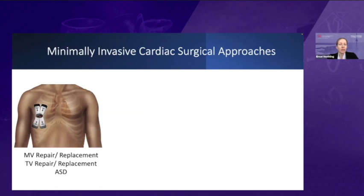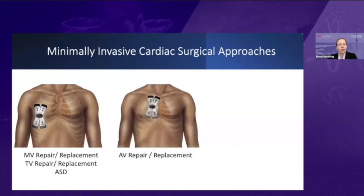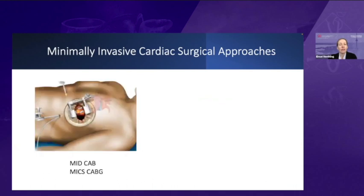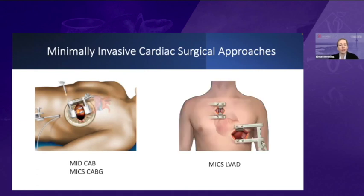With all of the different approaches we have for minimally invasive cardiac surgery, there are also different approaches to the chest. We do an anterolateral thoracotomy for mitral valve repair, tricuspid valve repair, as well as for an ASD. For aortic valve repair and replacement, we do a right anterior thoracotomy or a mini sternotomy. For MICS CABG, depending on whether we're doing left-sided or right-sided, we do a left anterior thoracotomy or a right-sided for a right coronary. You can also do a sternal-sparing procedure, such as a MICS ALVAD, with two incisions.